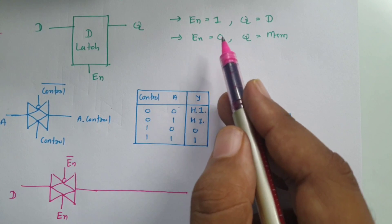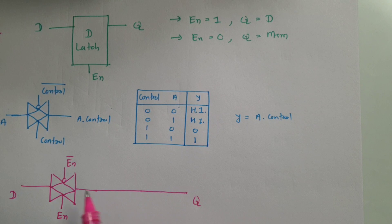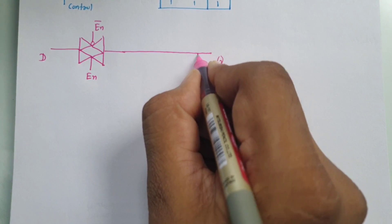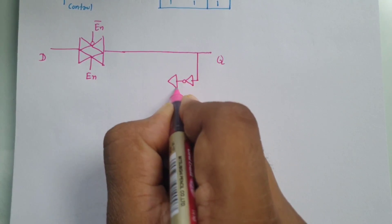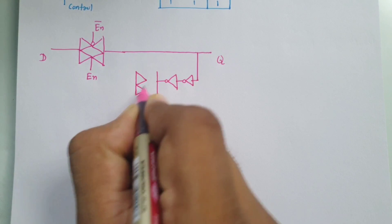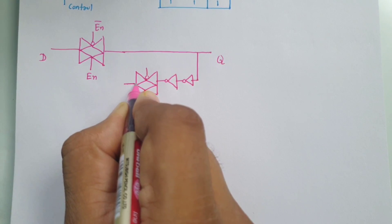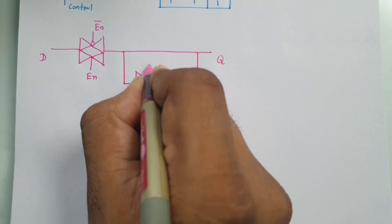But when enable is equals to 0, the first transmission gate will go in high impedance state, so it cannot hold our output. We need to provide further extension to the circuit — two inverters and one more transmission gate. Control to this second transmission gate is enable bar and enable.